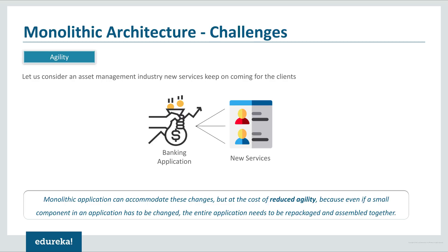The first challenge is agility. Consider an asset management industry where different clients come with different investments and have to be offered different services. If any new services had to be given to new clients or any new changes had to be made, monolithic applications could accommodate those changes — but at the cost of reduced agility. This happened because even if a small component had to be changed, the entire application had to be repackaged together.